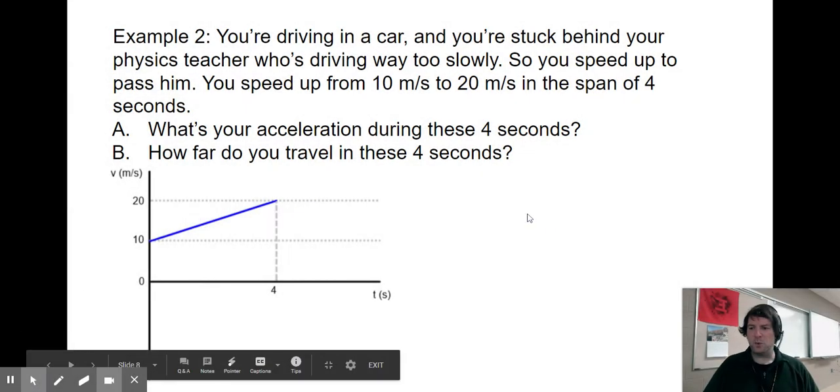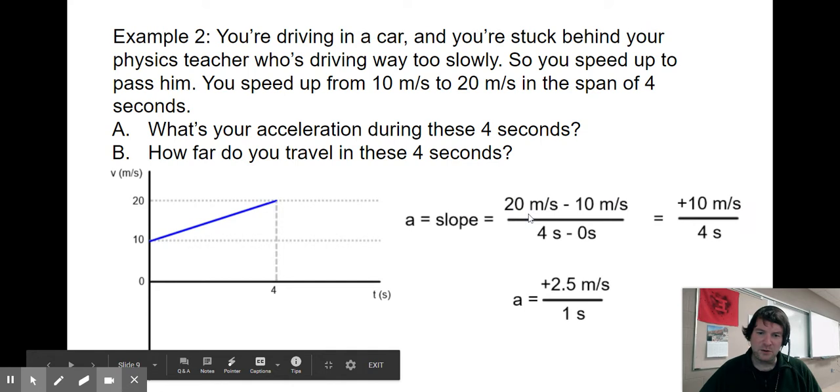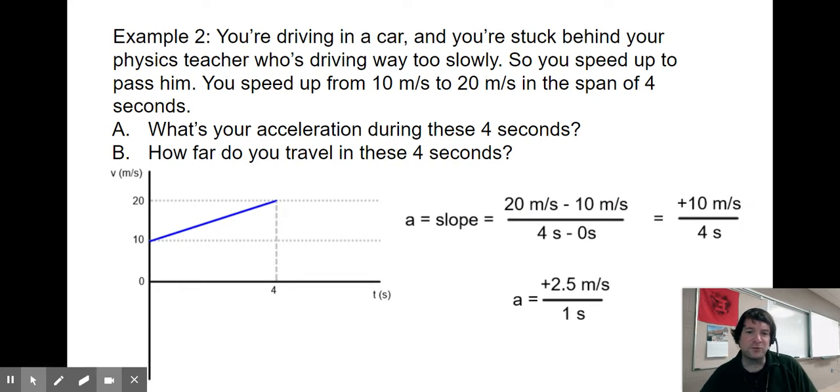If we want to solve for your acceleration, just like before we're finding a slope. Rise over run: we're going from 10 to 20 meters per second. Our numerator is 20 meters per second minus 10 meters per second. Our denominator is four seconds minus zero seconds.